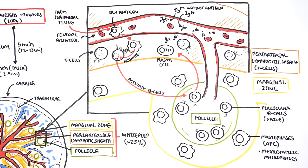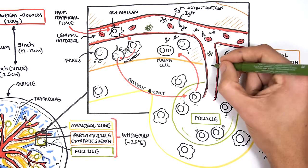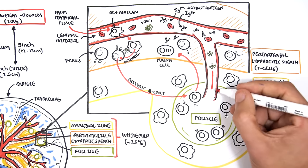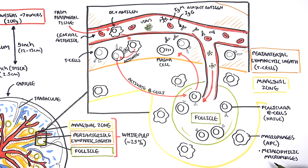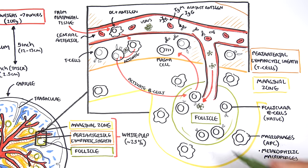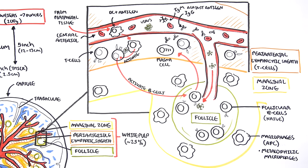Another example of white pulp function: a pathogen such as a virus can enter the spleen by itself. The virus contacts the naive B cells in the follicle. The B cells pick it up and present it to the nearby T cell. Through what is known as co-stimulation, the B and T cells activate each other. The activated B cell then becomes a plasma cell and produces antibodies against that specific virus.